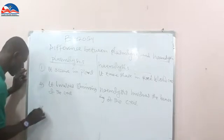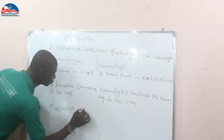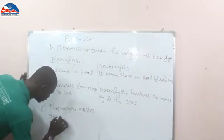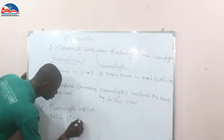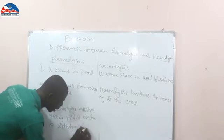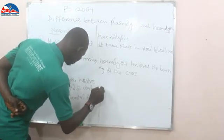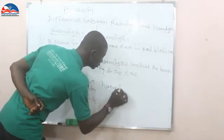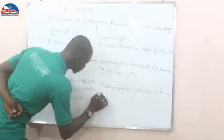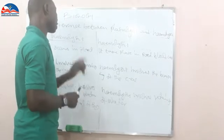Number three difference: plasmolysis involves the getting rid of water — the withdrawal of water (H₂O) — while hemolysis involves the retention or returning of water. So these are the differences between plasmolysis and hemolysis.